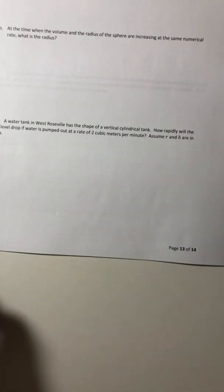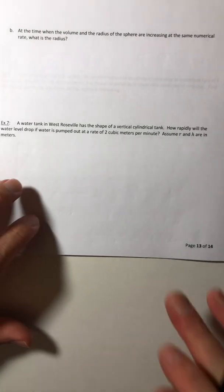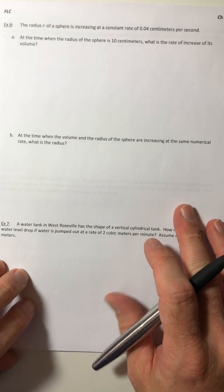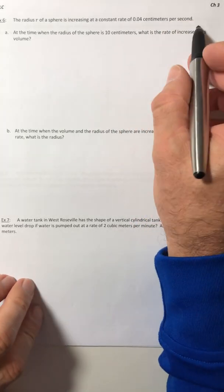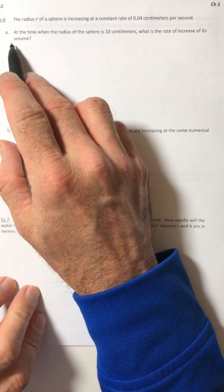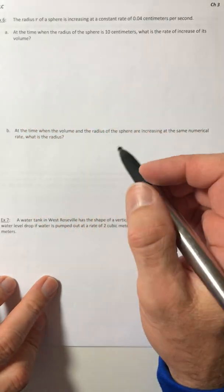Let's move on to example 6. The radius R of a sphere is increasing at a constant rate of 0.04 centimeters per second. At the time when the radius of the sphere is 10 centimeters, what is the rate of its increase of volume?